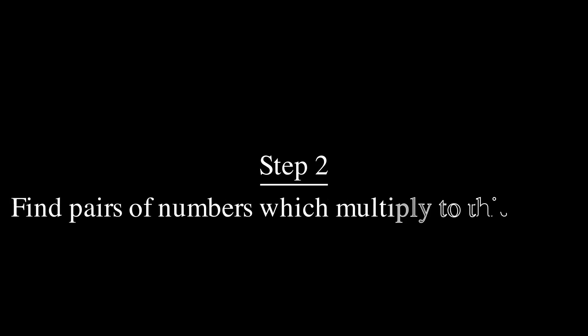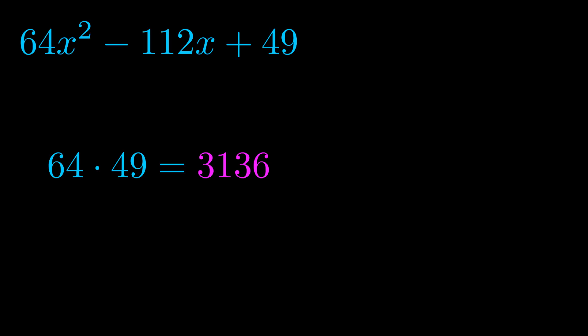Step two is to try to find all of the pairs which multiply to this number. Now it turns out you don't really need to find all of them, but go ahead and write down as many numbers as you can that multiply to the magenta value for now.